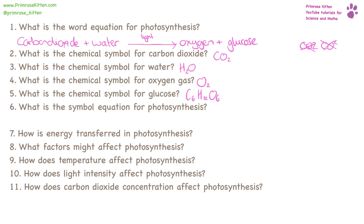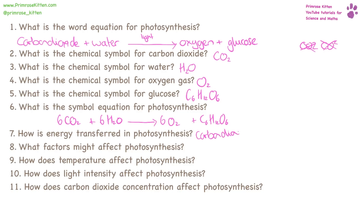The chemical equation for photosynthesis: carbon dioxide plus water turns into oxygen plus glucose. We need to balance this, and it's quite a nice easy one to remember — it is 6, 6, 6. How is energy transferred in photosynthesis? They take the energy that was in carbon dioxide and store it in glucose.